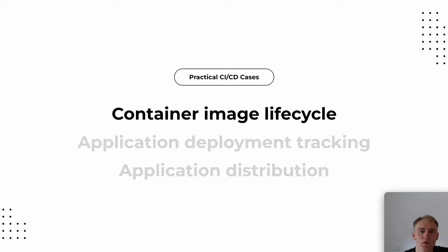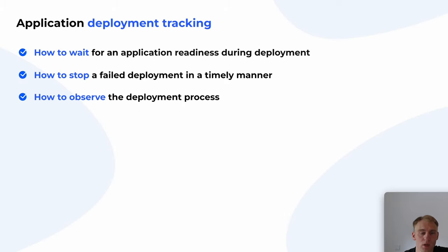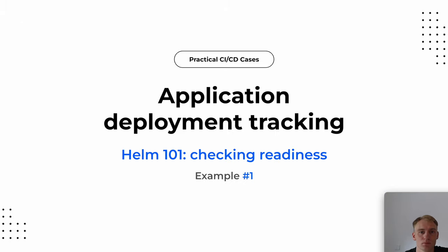We can now move on to the central part — application deployment tracking. In this part I will touch on: how to wait for an application to be ready during deployment, how to stop a failed deployment in a timely manner, and how to make the deployment process transparent and verbose. I would like to start by looking at what Helm can do in this context, though the discussion is valid not only for Helm.